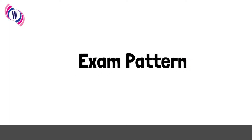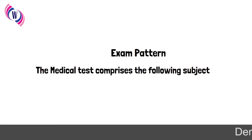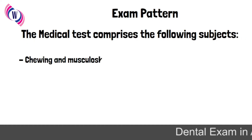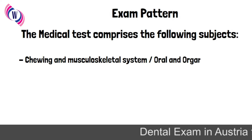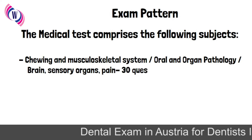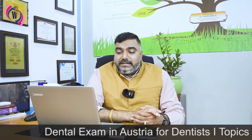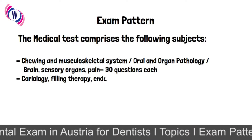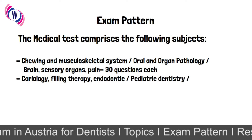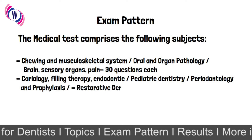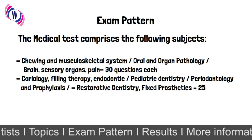What is the exam pattern and how do these topics cover in the exam? The medical test comprises the following subjects. First is carving and musculoskeletal system, oral and organ pathology, brain sensory organs and pain — these topics contain 30 questions each. Then second: cariology, filling therapy, endodontics, pediatric dentistry, periodontology and prophylaxis, and restorative dentistry and fixed prosthetics — these topics each contain 25 questions.